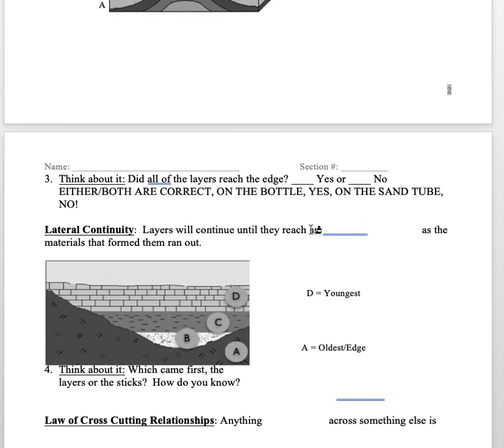That idea about layers reaching the edge is called lateral continuity, which means layers will continue until they reach an edge or they run out. If you think about your flooring, you'll notice that your flooring goes all the way to the edge of the room or until your parents were like, we're going to stop right here. Sometimes like in my bathroom downstairs we have not finished it and we ran out of tile, so if you look way back in the back corner there's a little chunk that's missing.